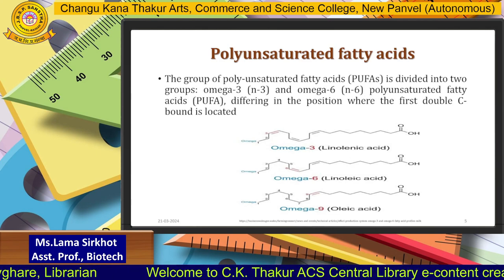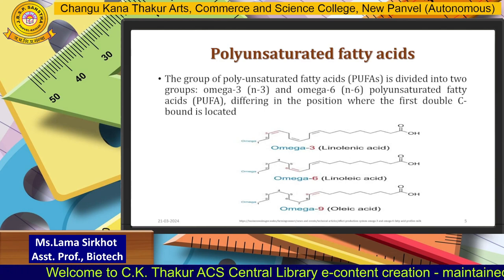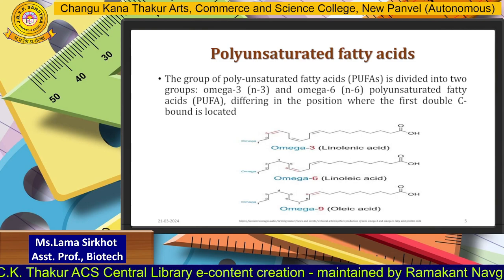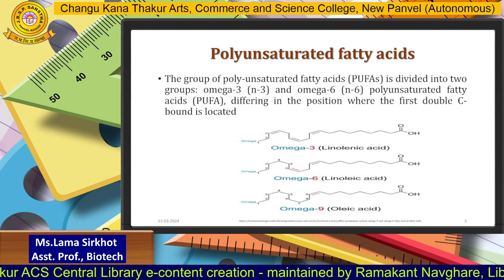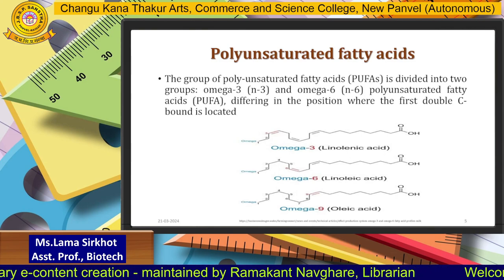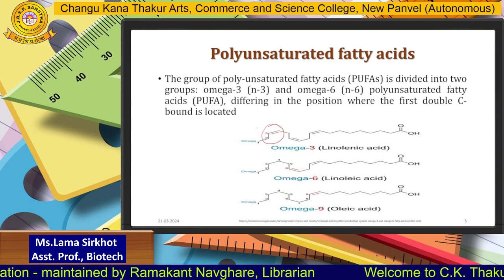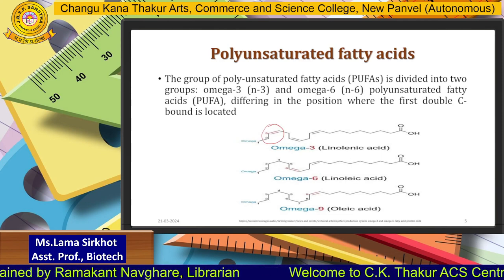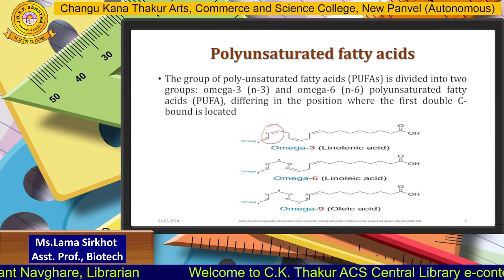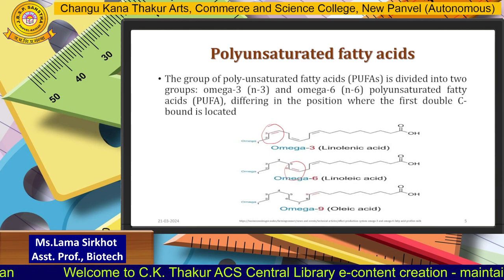Polyunsaturated fatty acids are divided into two major groups: omega-3 fatty acids and omega-6 fatty acids. These differ due to the position where the first double carbon bond is located. As you can see in this diagram, the first double bond in omega-3 fatty acid is at the third position, whereas in the second diagram the first double bond is at the sixth position — hence the names omega-3 and omega-6 fatty acid.